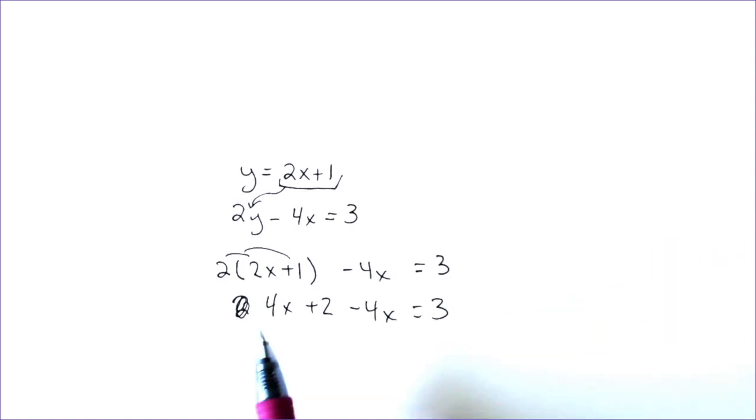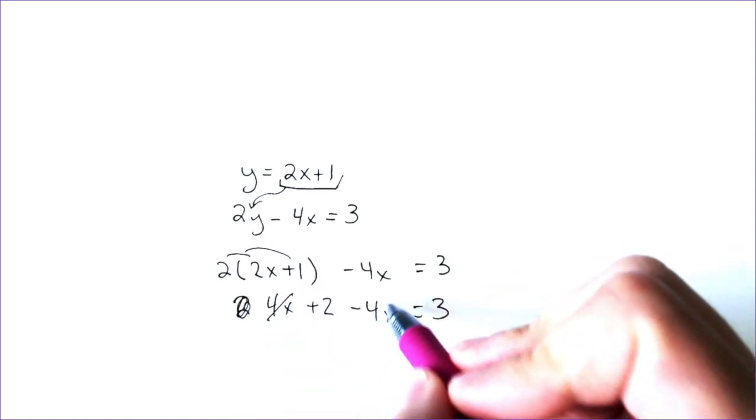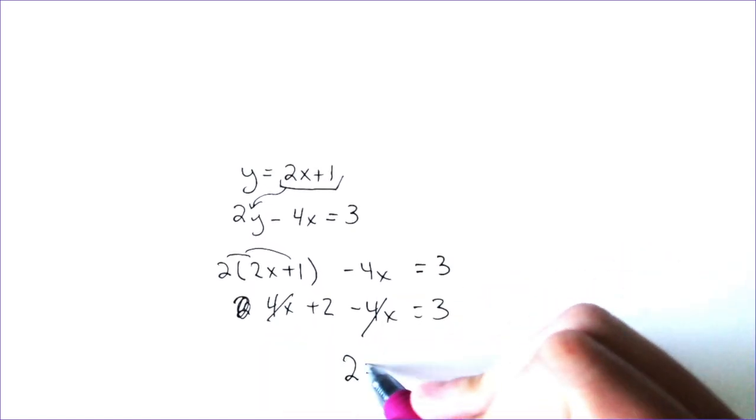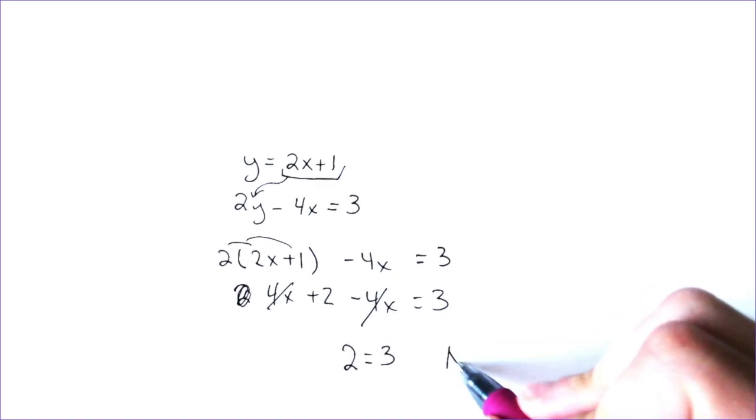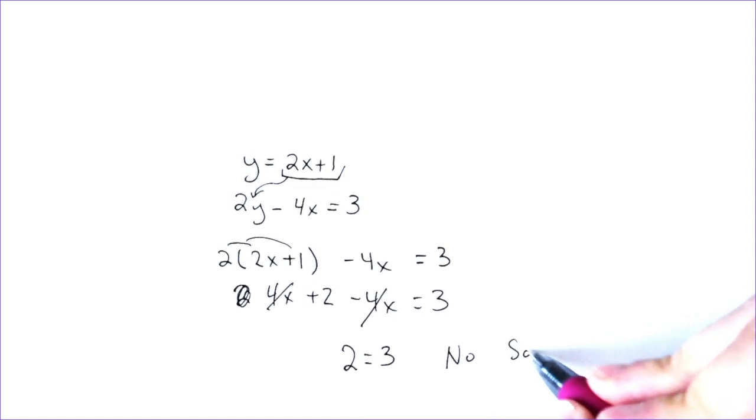Well here, 4x and minus 4x cancels out, and we're left with just 2 is equal to 3. And you have to ask yourself, is 2 equal to 3? And the answer to that is no, 2 does not equal 3, and that would indicate that this is no solution.